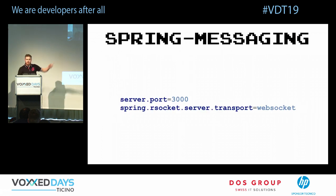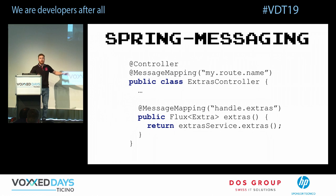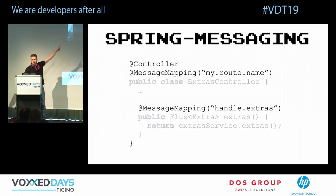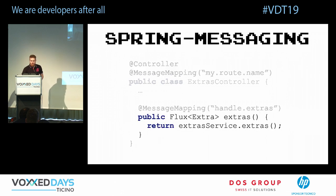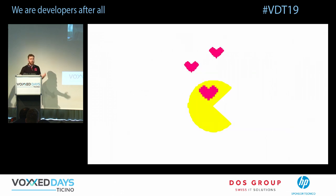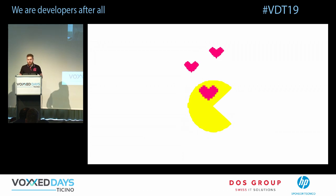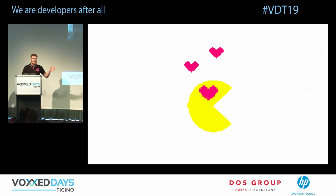If you prefer Spring, there's Spring Messaging with a Spring Boot Starter for RSocket. Just define port, host, and transport — then replace your Flux controller with a few annotations like `@MessageMapping`. That's all you need to start using RSocket with Spring, changing nothing else.